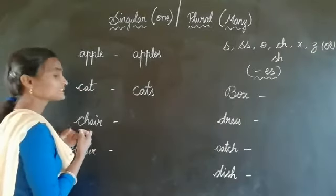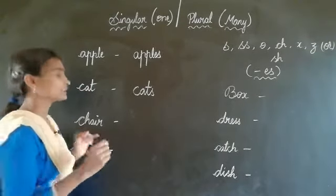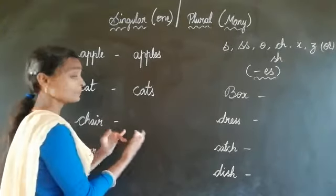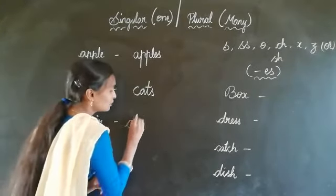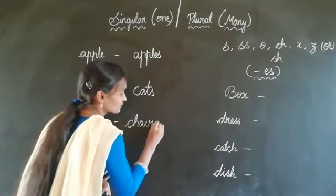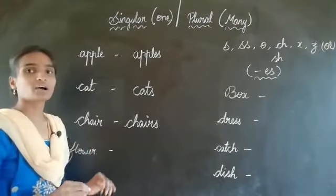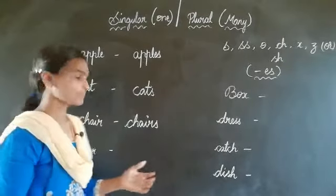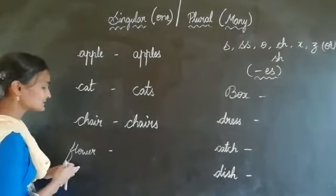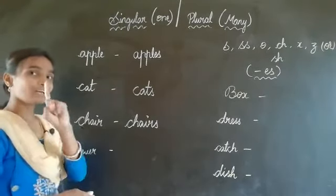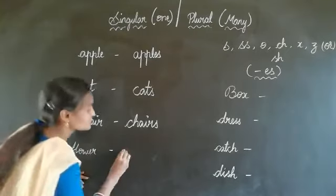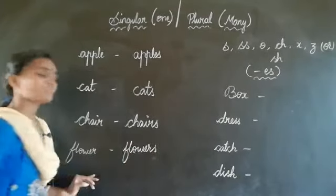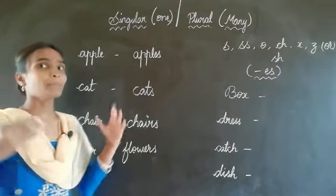Chair. Chair is a single object. For a single object we should form it into plural form — chairs. Chairs comes under many chairs. See here — flower. Flower is a single object. We are adding S to the flower, so flowers became many.